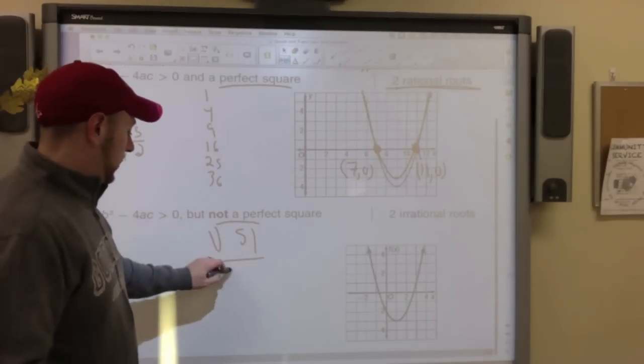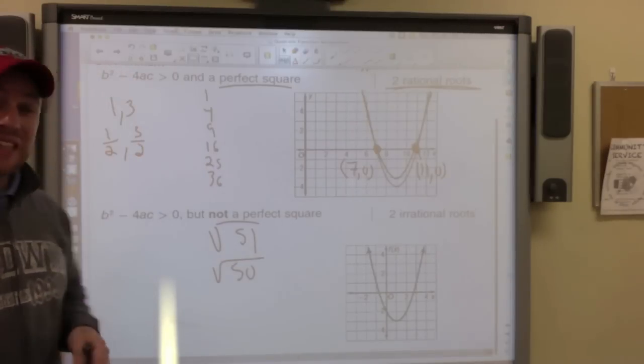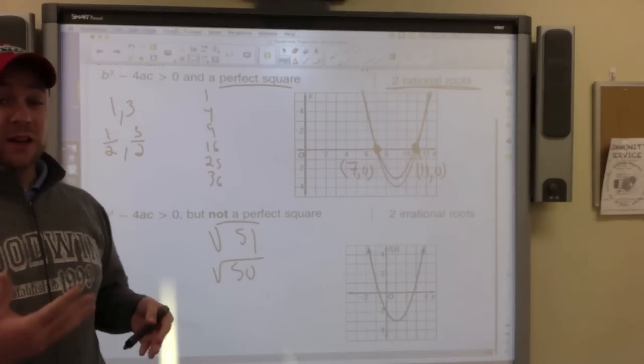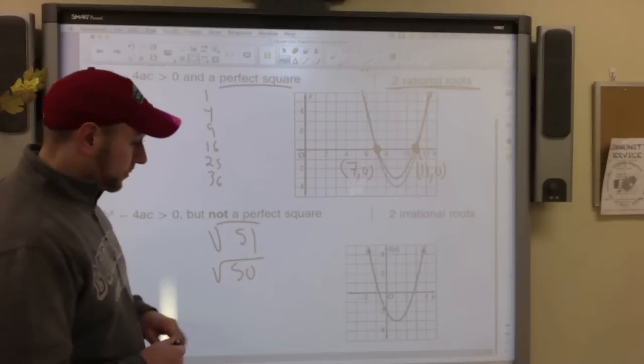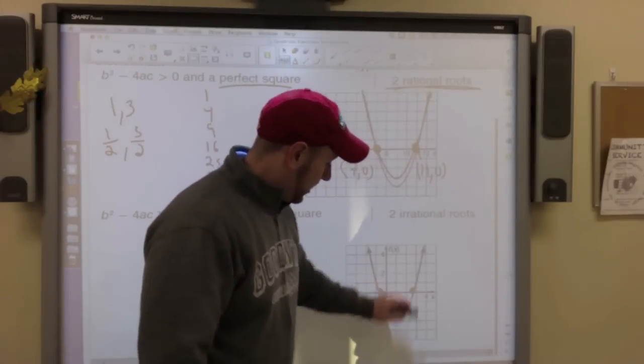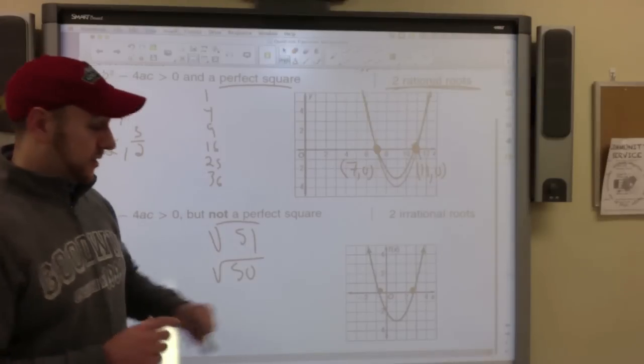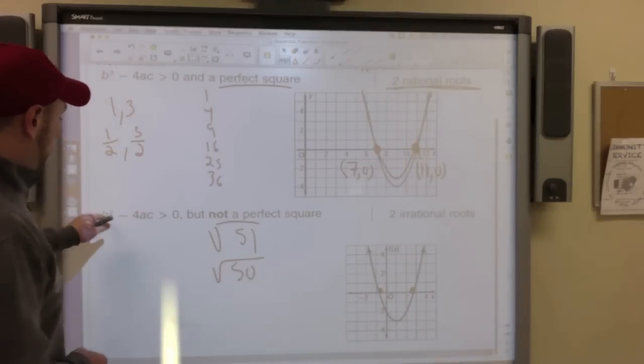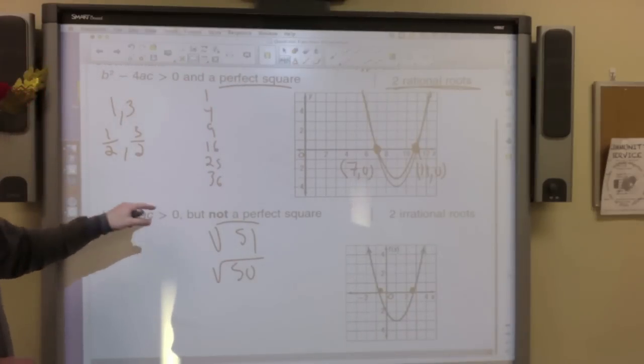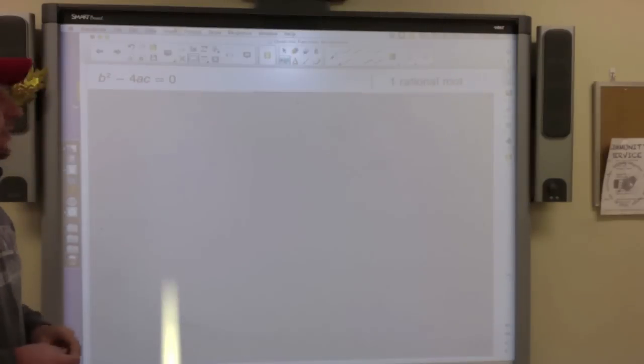If b squared minus 4ac isn't the perfect square, so if we get like 51, 50, where we have to break down the square roots, it's not as easy. We're not able to find the specific number. And you notice that this graph right here, we don't know where they cross exactly because they're not on a line. So that's if b squared minus 4ac is greater than 0, but not a perfect square.